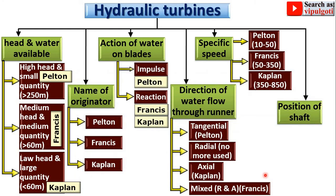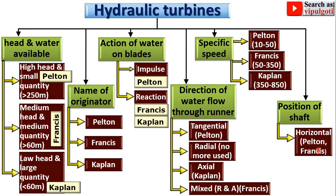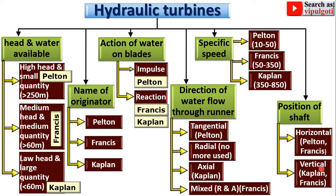Next, classification according to the position of the shaft. Horizontal hydraulic turbines — examples are the Pelton wheel and the Francis turbine. Vertical hydraulic turbines — examples are the Kaplan turbine and the Francis turbine. So the Francis turbine can be oriented either horizontally or vertically.